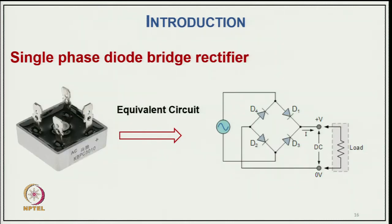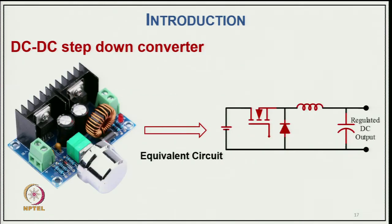A single-phase rectifier converts AC to DC to feed DC circuits, realizing a DC voltage source with the help of an output filter. A DC-DC step-down converter, also called a buck converter, takes a DC source and produces a lower voltage DC output using on-off chopping, an inductive filter, and an output capacitor. These circuits consist of both linear and non-linear elements, as discussed in the last class.